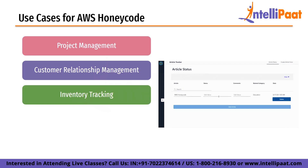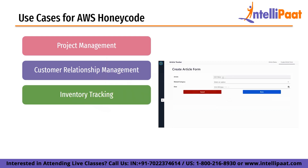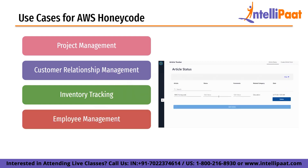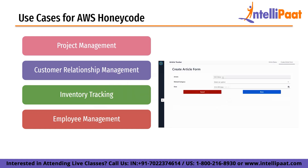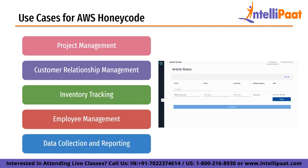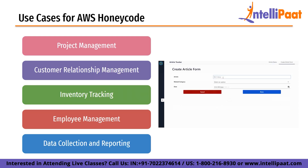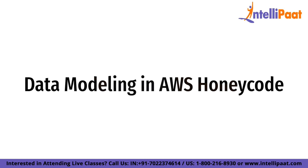Next on the list is inventory tracking. Honeycode can be used to create custom inventory tracking apps that monitor stock levels, track shipments and manage purchase orders, helping businesses stay on top of their inventory and reduce stockouts or overstocks. Next is employee management. Honeycode can be used to build custom employee management apps that track employee schedules, attendance and performance. And finally, data collection and reporting — Honeycode can create apps that gather data from multiple sources and generate reports to help businesses make data-driven decisions.